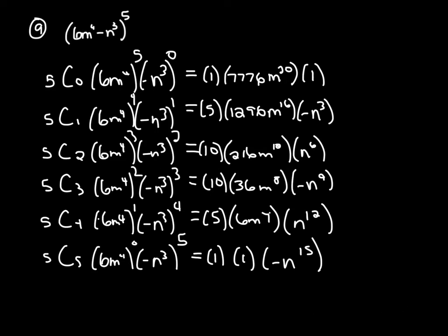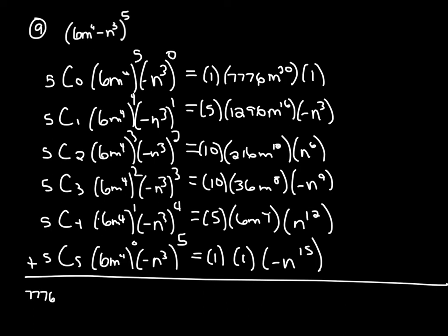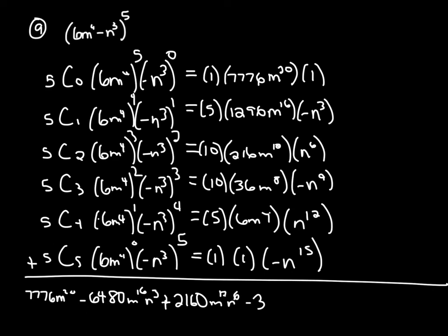Now I'm going to take all my answers and write one big long expression going across — really you're adding all these together. The first term gives 7,776m to the 20th. The next product gives negative 6,480m to the 16th n cubed. Then plus 2,160m to the 12th n to the 6th, then minus 360m to the 8th n to the 9th, plus 30m to the 4th n to the 12th, and then minus n to the 15th.